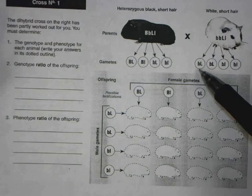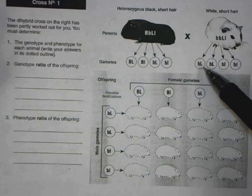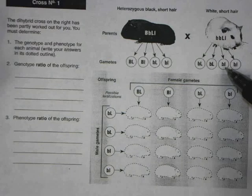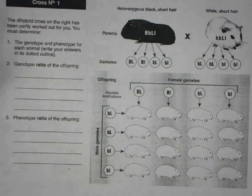For the white short-haired parent, the gametes are: little b capital L, little b capital L, little b little l, and little b little l.